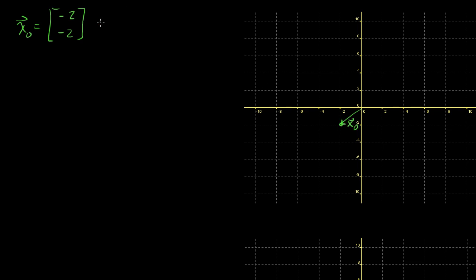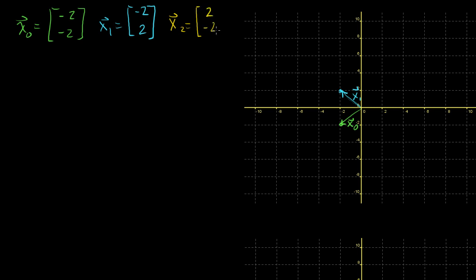My next position vector is x1, and that's equal to minus 2, 2. So graphed at minus 2, 2 — that's x1. When I say it's a position vector, they specify a specific coordinate in R2. And a third one, x2, is equal to 2, minus 2, which goes right here.